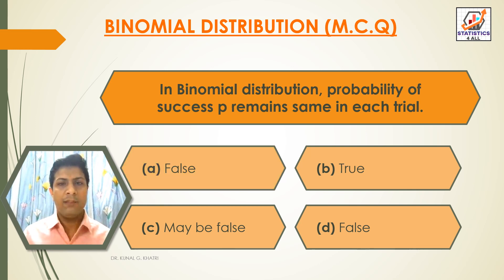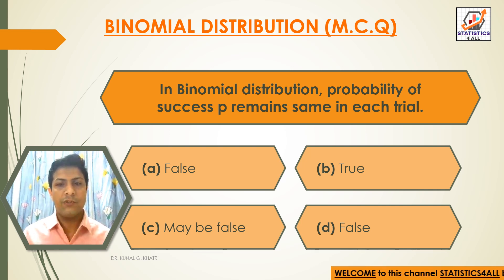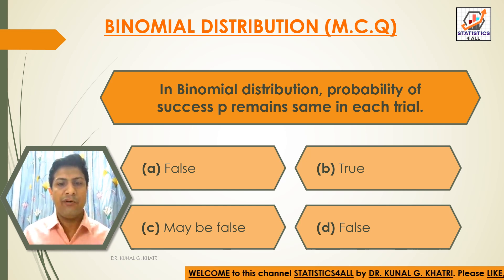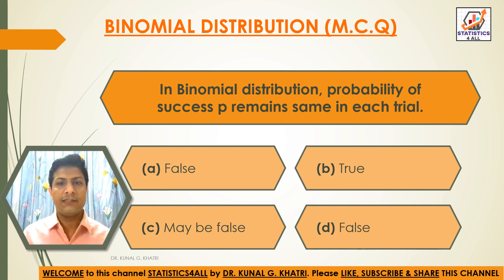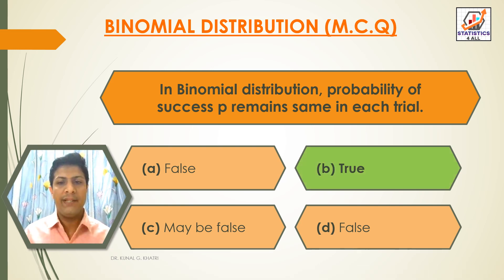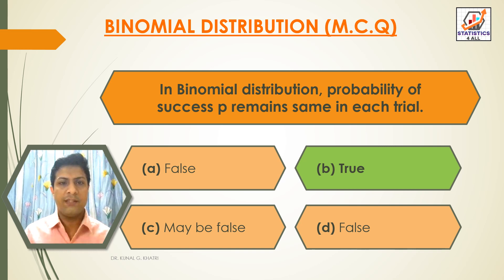Next question: In binomial distribution, probability of success P remains the same in each trial. Option A: False. Option B: True. Option C: May be false. Option D: False. The answer is option B — True. In binomial distribution, probability of success P remains the same in each trial.